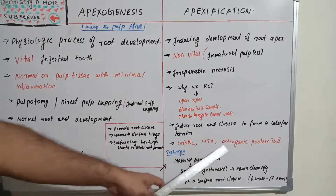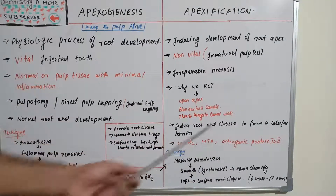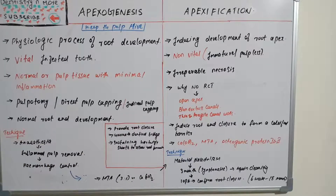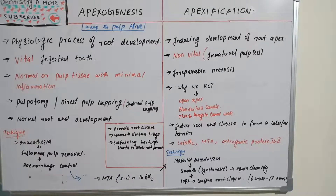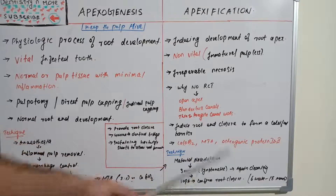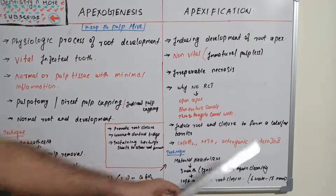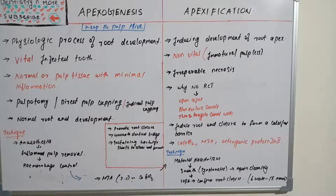This barrier is induced by placing calcium hydroxide, MTA, or osteogenic proteins 1 and 2. The procedure involves removing the entire pulp, placing the material at the root apex, and recalling the patient after three months to check whether it is symptomatic. If symptomatic, the canals are cleared again, working length is checked, canals are cleaned, material is replaced, and an intermediate restorative material (IRM) is placed. The patient is sent back and recalled after another three months, when an IOPA radiograph is taken to check root closure.